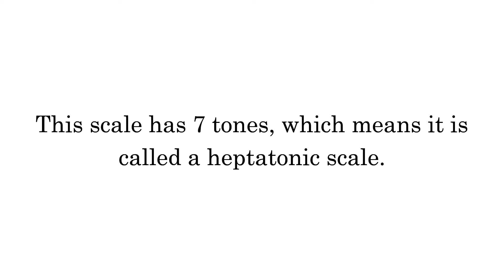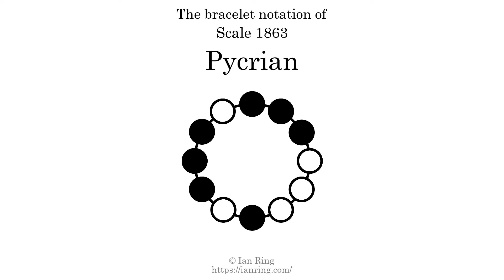This scale has seven tones, which means it is called a heptatonic scale. This is a bracelet notation diagram of scale 1863. The shaded circles represent tones that appear in the scale, and they are read clockwise, starting at the top.